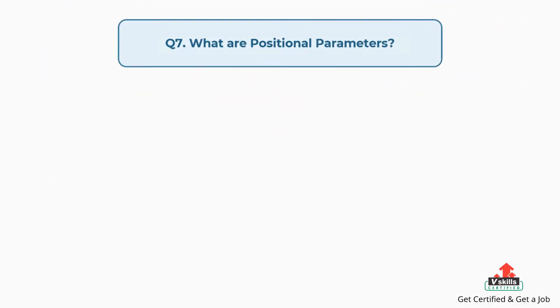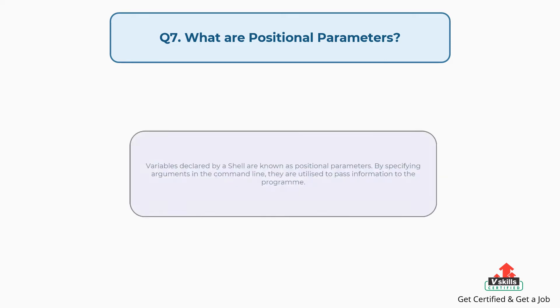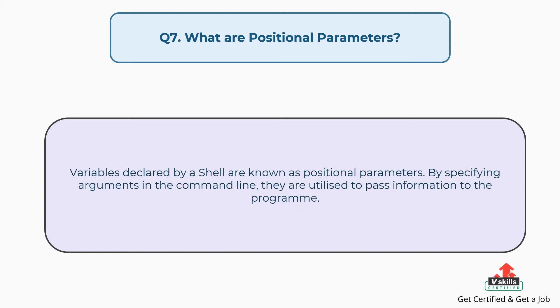Question number seven: what are positional parameters? Variables declared by a shell are known as positional parameters. By specifying arguments in the command line, they are utilized to pass information to the program.